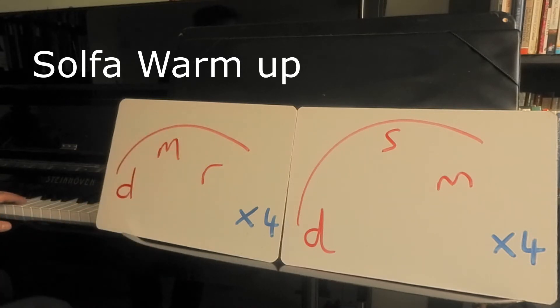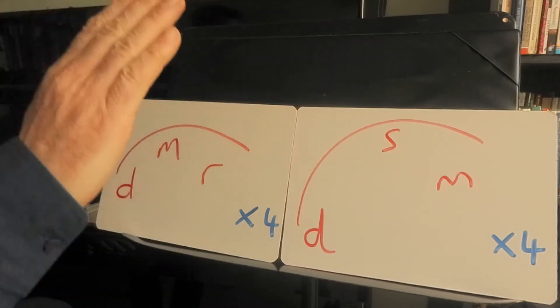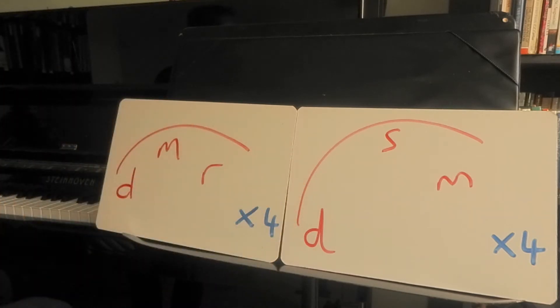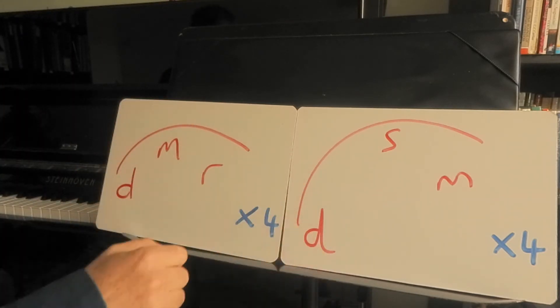We're going to do that four times. Here's your hand signs. Do Mi Re. Recap on those. We'll do that four times and then we'll go on to this guy.